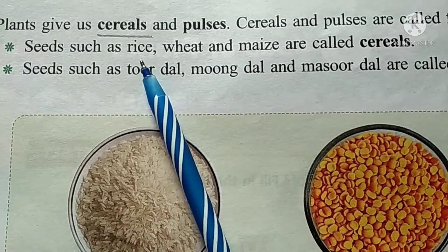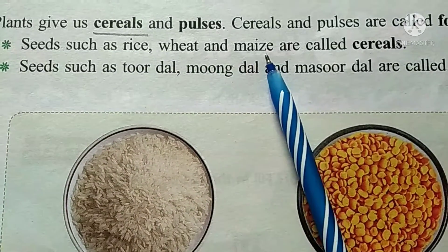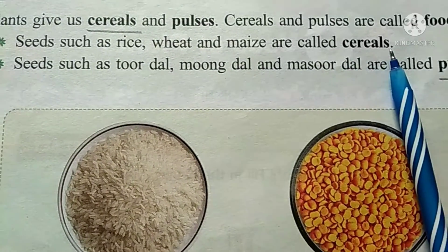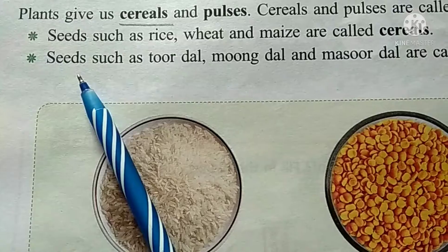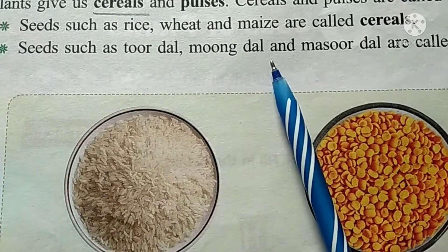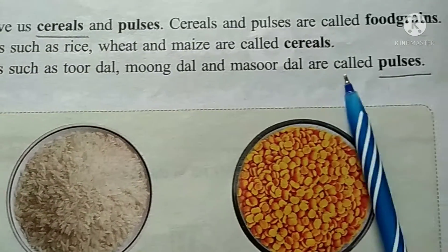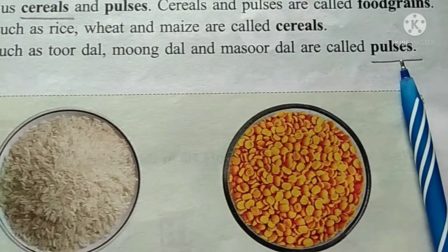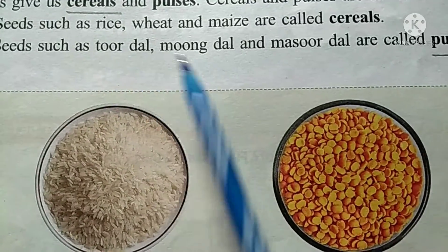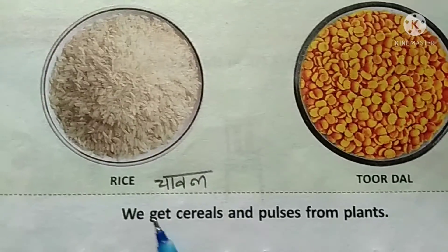Rice (chawal), wheat, maize (macka) — these are called cereals. Seeds such as toor dal, mung dal and masoor dal are called pulses. Pulses किसी करते हैं? Toor dal, mung dal and masoor dal.